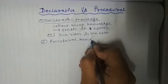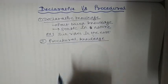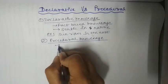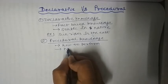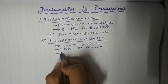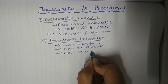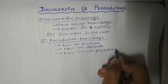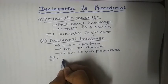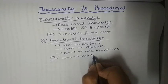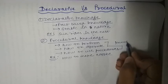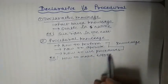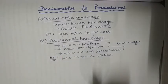In procedural knowledge, we must know how to perform certain things — how to operate, how to use procedures. A real life example is: how to make coffee. We must know the procedures involved and have the knowledge of how to perform and operate this thing. That is procedural knowledge.